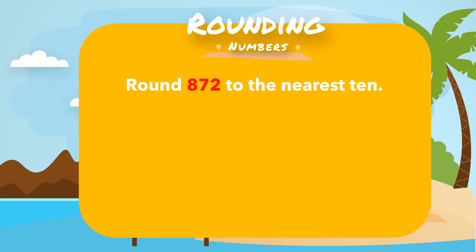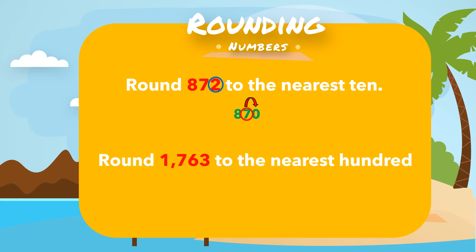For example, round 872 to the nearest 10. The answer is 870, because the number located to the right of the tens position is less than 5, so the digit in the tens position stays the same and the digits to the right are replaced with zeros. Another example: round 1,763 to the nearest 100. The answer is 1,800, because the number to the right of the hundreds position is 6, which is greater than or equal to 5. So the digit in the hundreds position increases by 1, and the digits to the right are replaced with zeros.